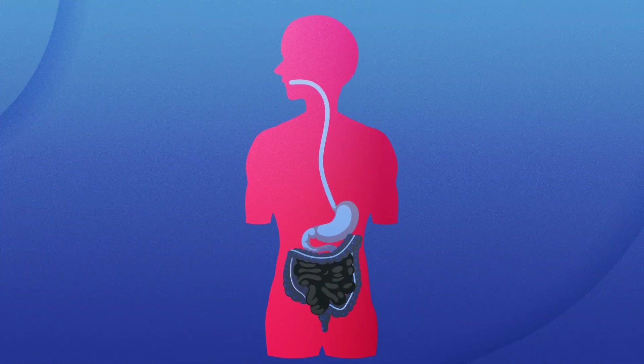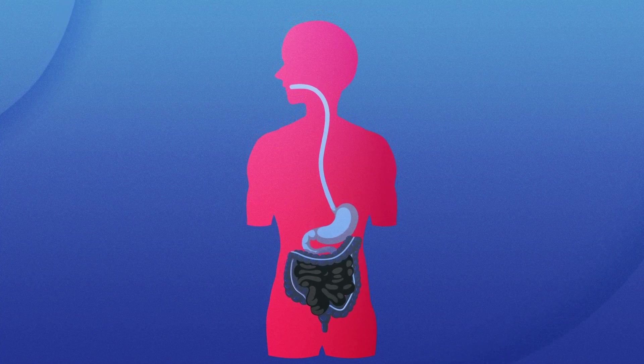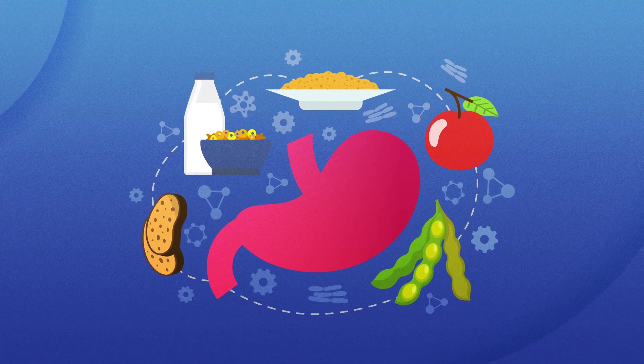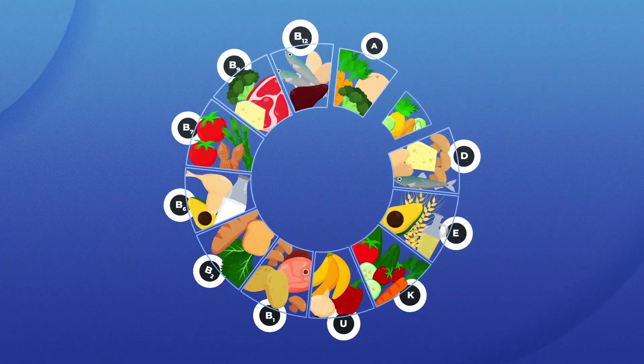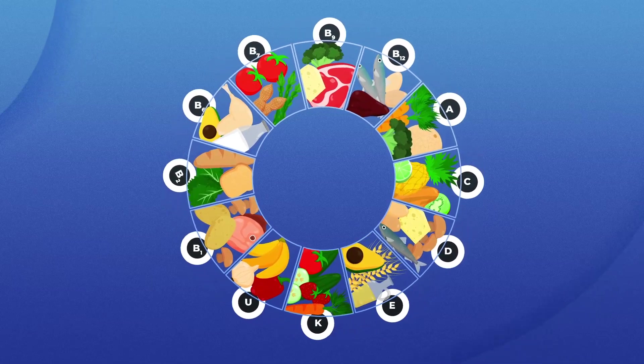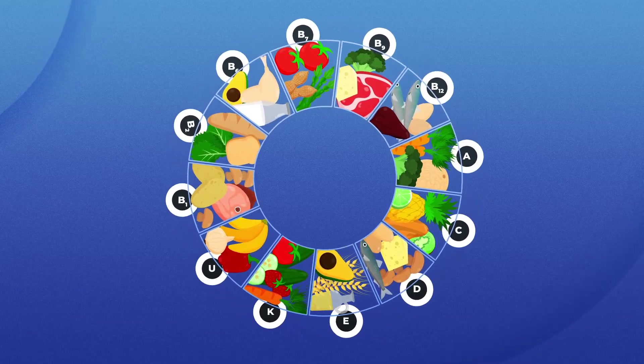Our gut microbiome, known as a powerhouse for digestion, goes beyond breaking down complex carbohydrates and extracting nutrients. It also plays a crucial role in synthesizing essential vitamins like vitamin K, biotin, folate, and vitamin B12.